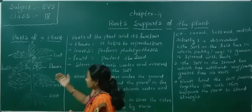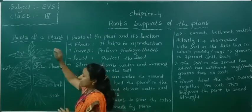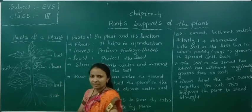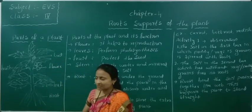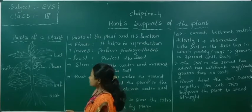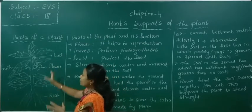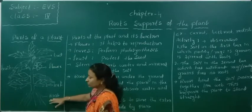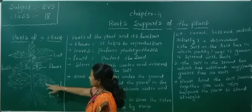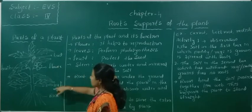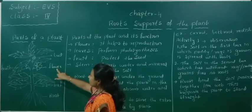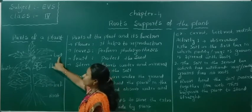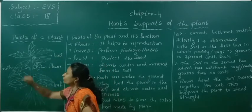Today we will start with the parts of the plant. You have already studied this in earlier classes. Here are the parts of the plant: root, leaves, flower, bud, and fruit.